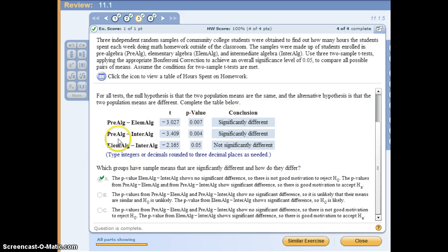In this case, we fill out all the numbers. Then we know that only elementary algebra and intermediate algebra, this pair of comparison, shows no significant difference. There is not good motivation to reject null. That's why we chose A.